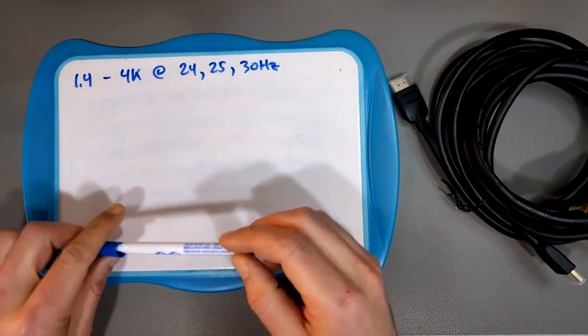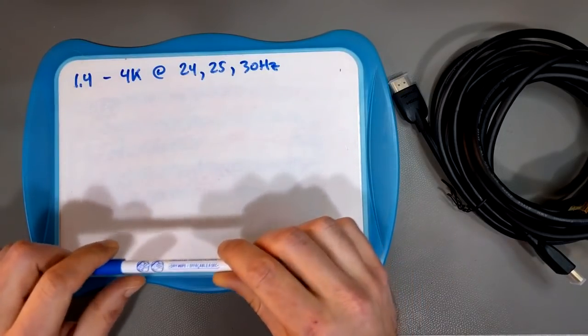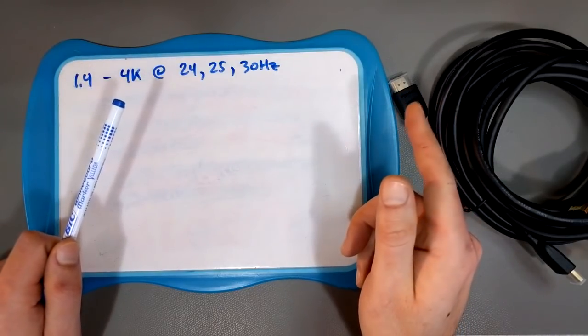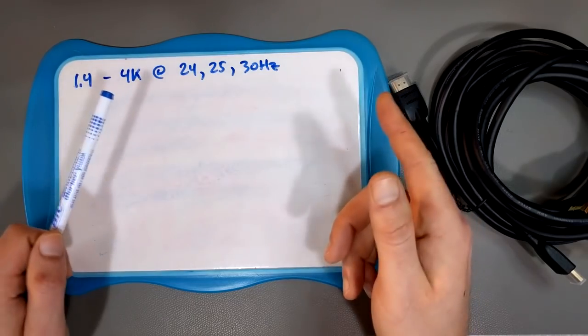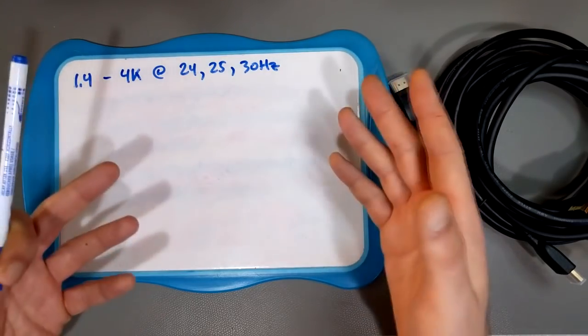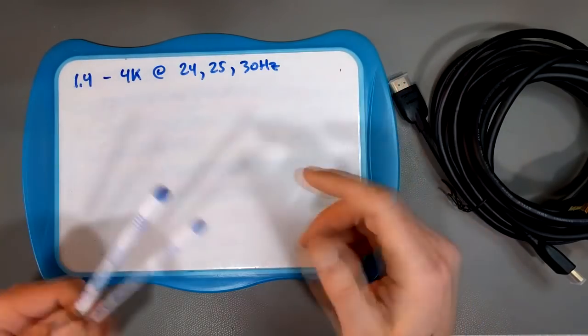1.4 also introduced some other fun things like HEC, HDMI Ethernet channel. That's basically a 100 megabit Ethernet connection that also travels over the HDMI cable. So all your gizmos connected together can share an internet connection network and do stuff.